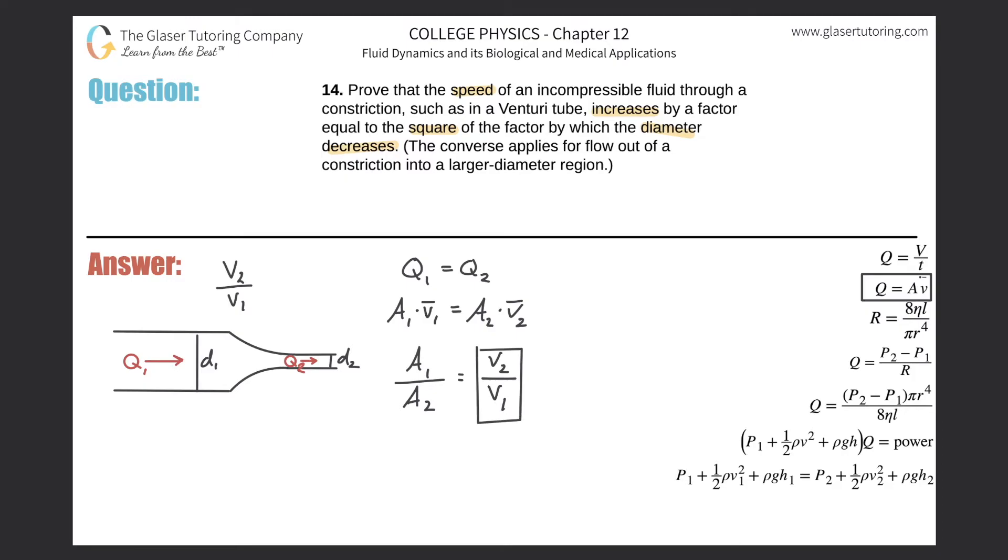Now, this is the variable of interest, so I'm going to leave it alone. Now I have to start investigating my areas. Now remember, this is a cylindrical tube, so therefore the cross-sectional area is a circle. So I can expand each of these areas to be pi R squared. Now I'm going to call this pi R sub 1 squared for the radius of the first portion, and then divide that by pi R2 squared.